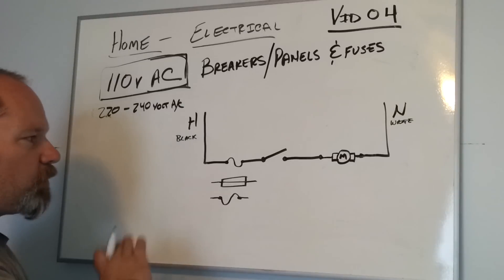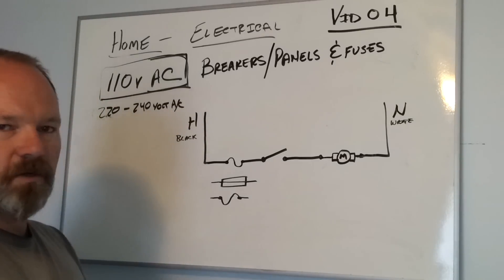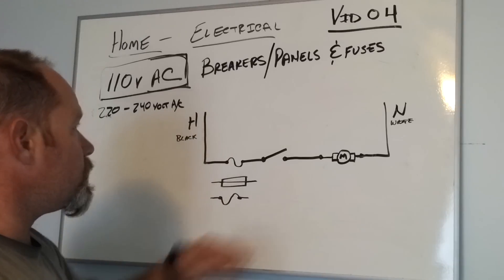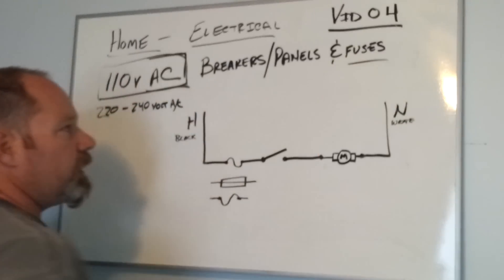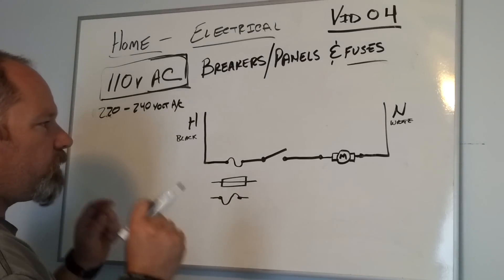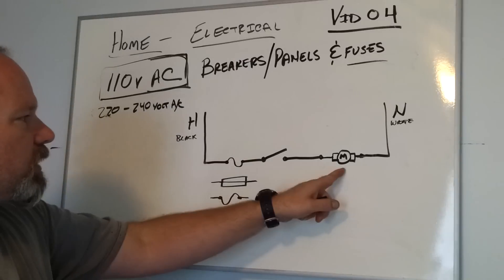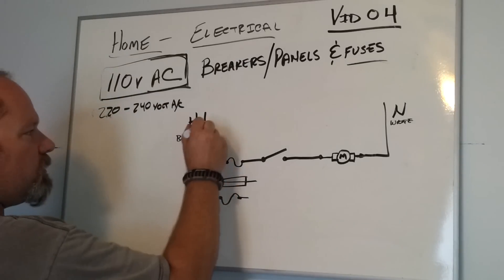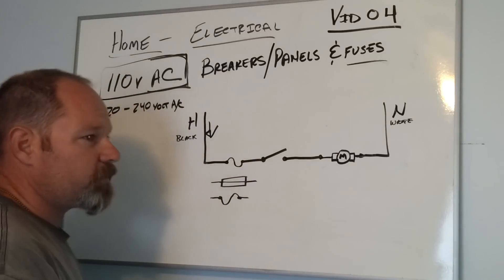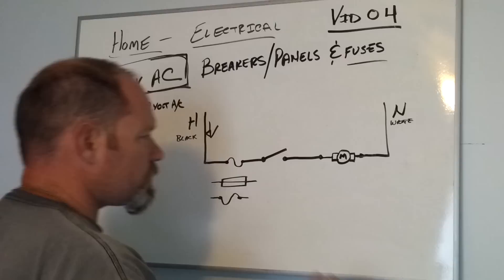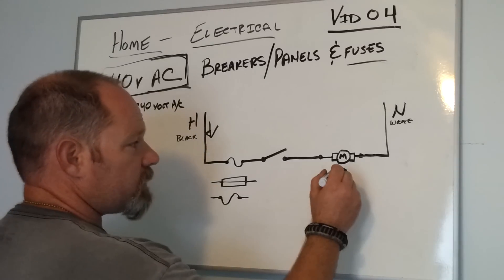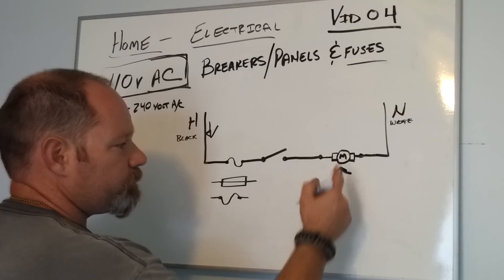We'll get into more advanced fuses like time delays, resettable breakers, and things like that later, but basically we need to over-amperage protect the circuit. If this fuse wasn't here and you had a high spike — like a surge from a lightning strike — you run the risk of burning out your motor, or something electrical happens inside the motor.